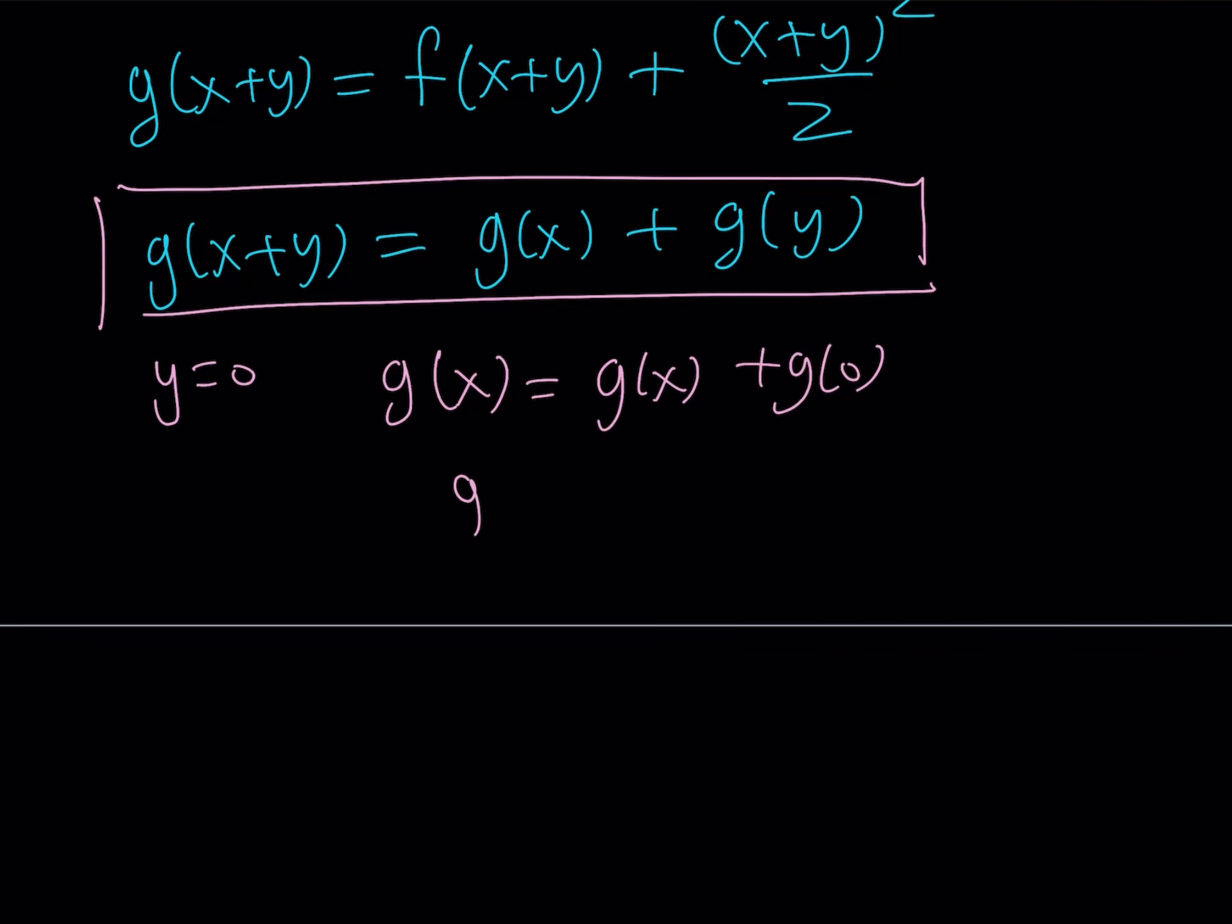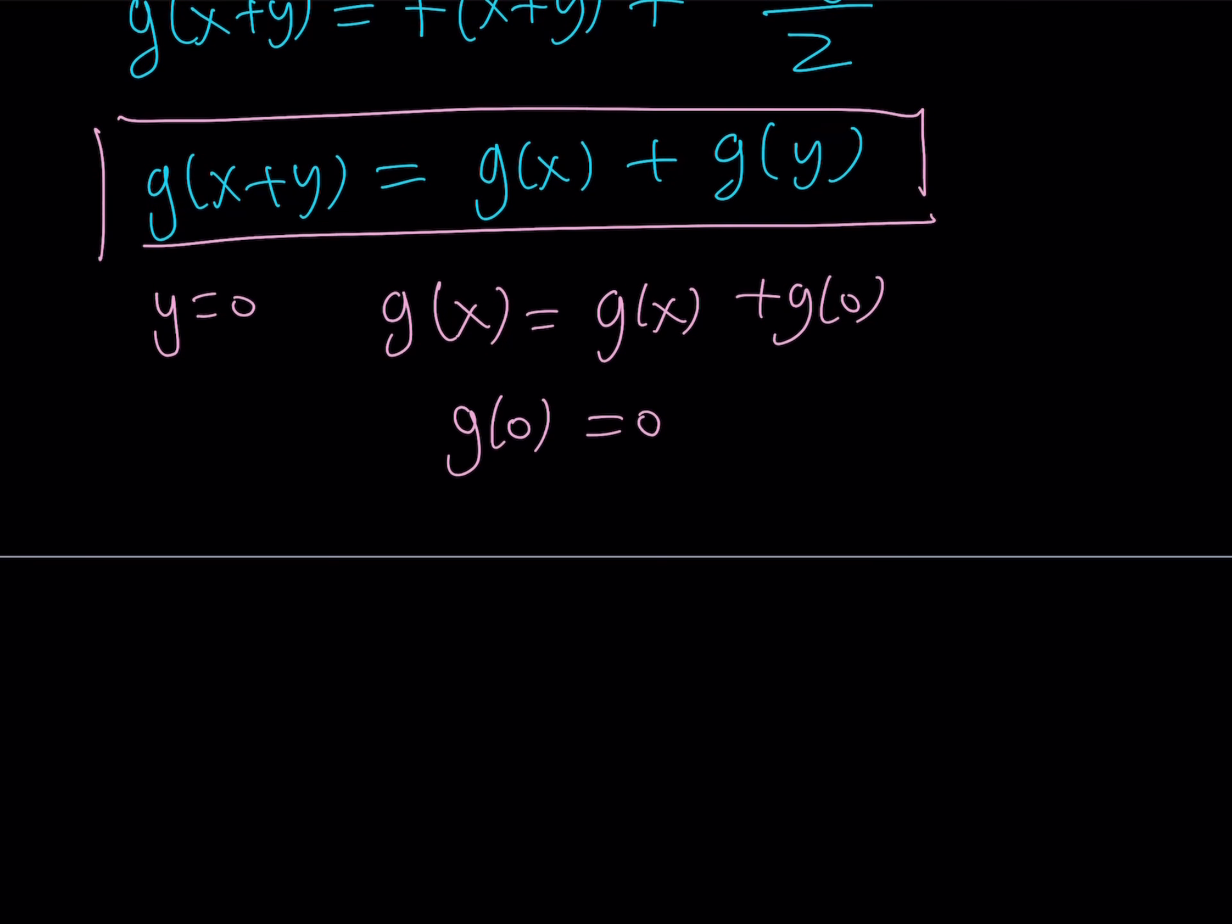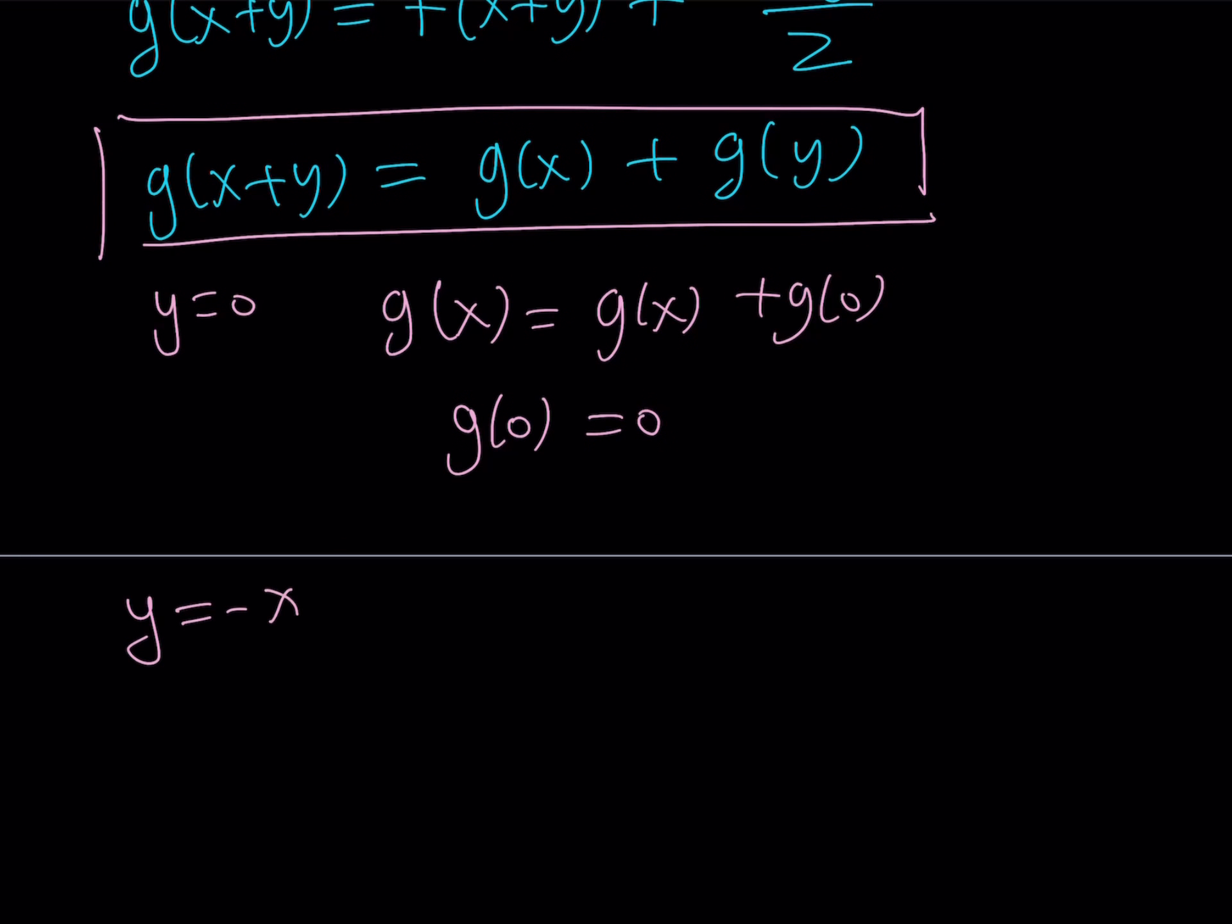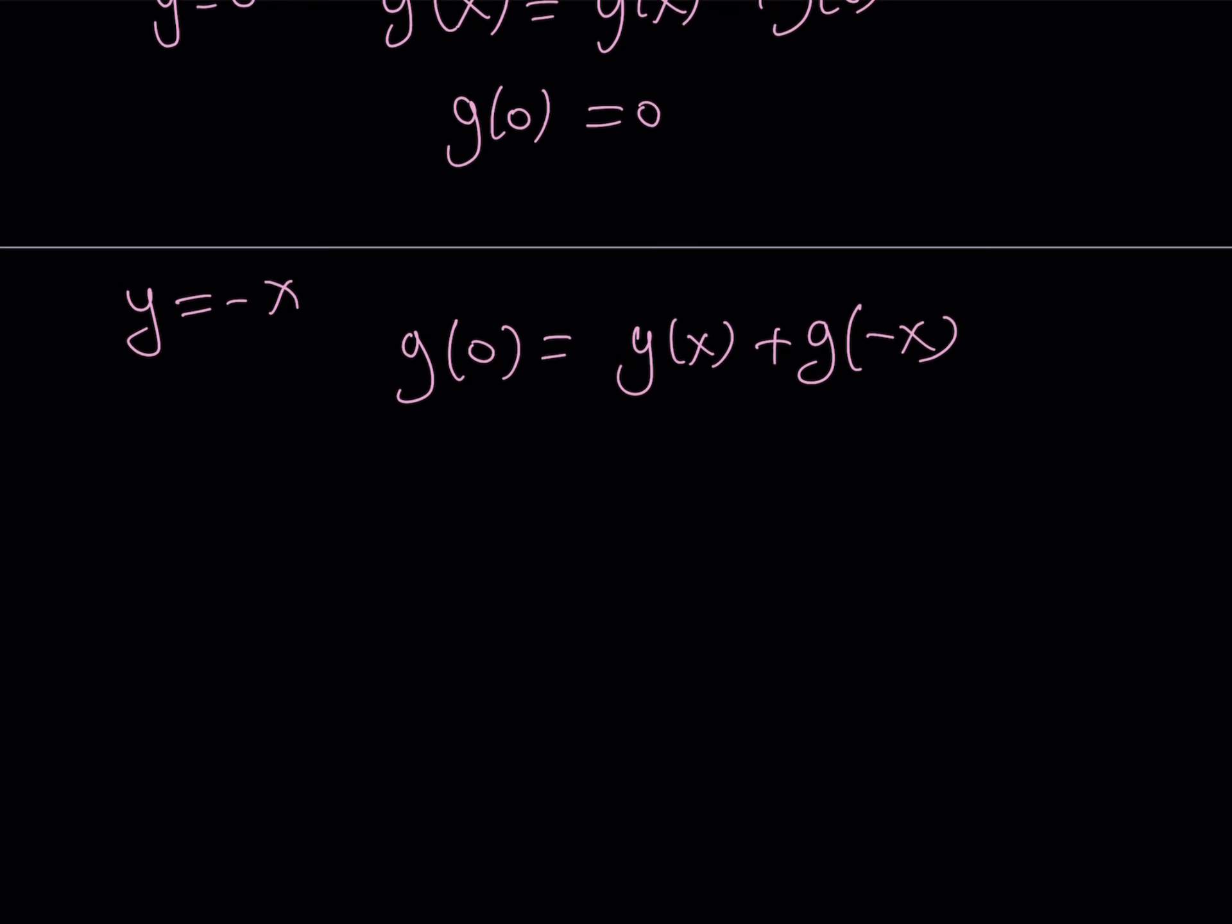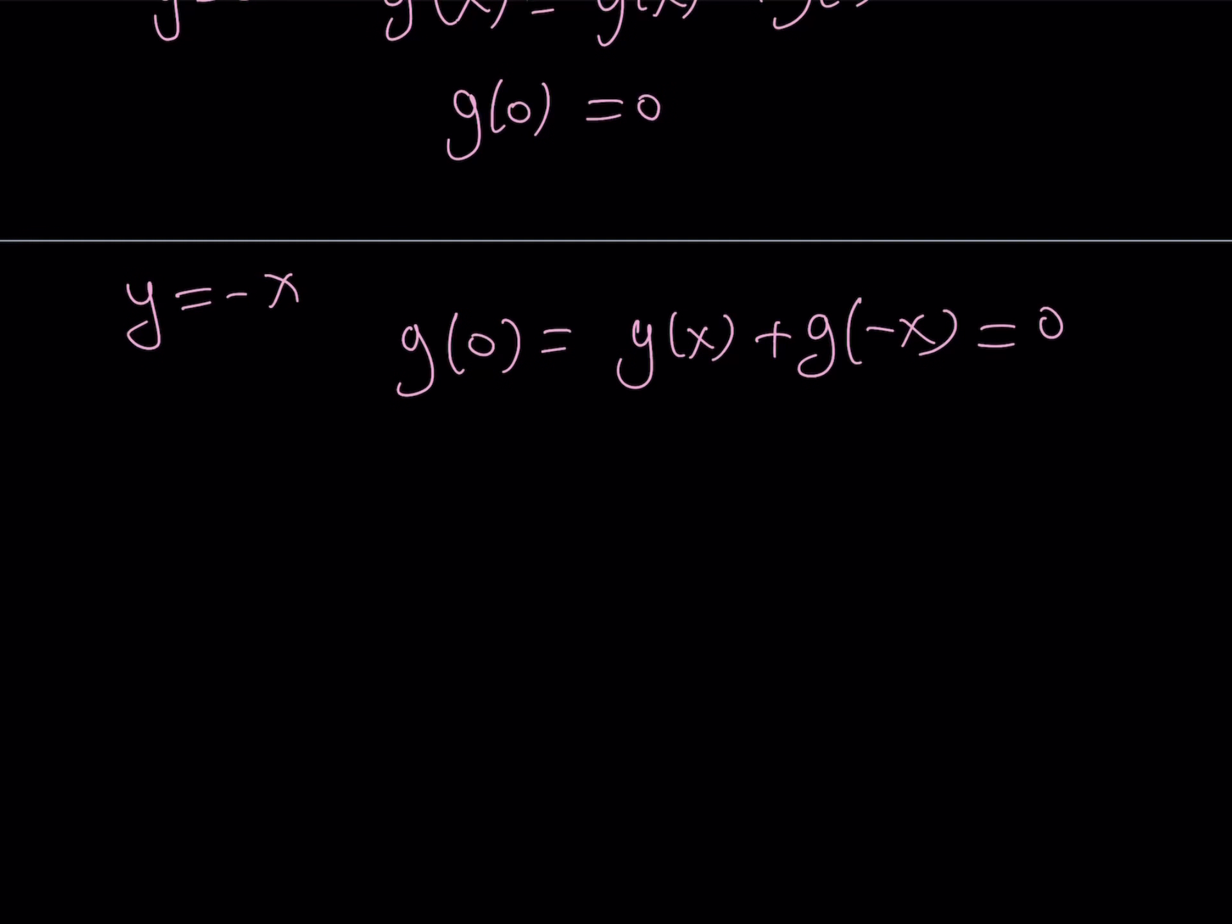So from here, you get g of 0 equals 0. That's one of the observations I want you to make. The second observation I want you to make is replacing y with negative x, I get g of x minus x, which is 0, equals g of x plus g of negative x. And since g of 0 is equal to 0, we can set them equal to 0.